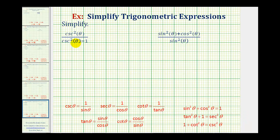We want to simplify the given trig expressions, which normally means we want to write them in terms of a single trig function if possible. Looking at these two expressions, notice how we have trig functions squared, which means we should be looking at the Pythagorean identities to perform substitutions as a first step.